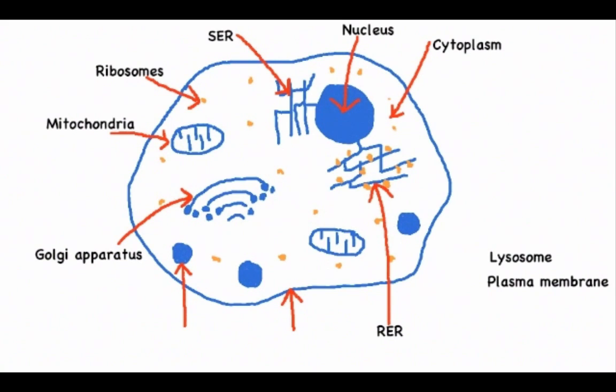Now the Golgi apparatus is represented as curved with dots at the end that represent the vesicles that may break away from the Golgi apparatus. The lysosomes I'm going to represent as colored circles, but they are distinctly smaller than the nucleus. And finally you have the plasma membrane, which is the boundary or line surrounding the entire eukaryotic cell.